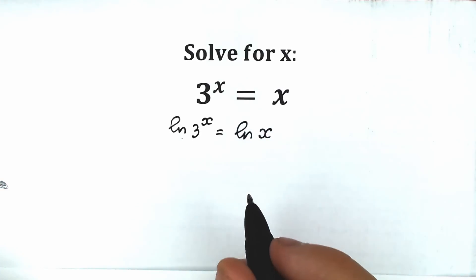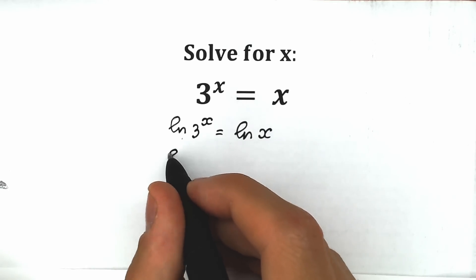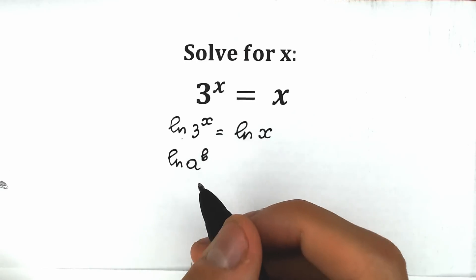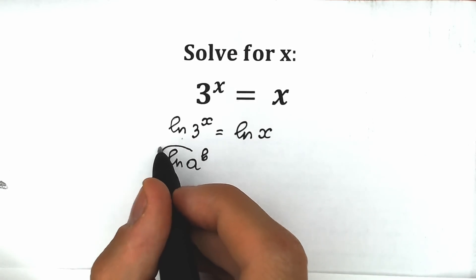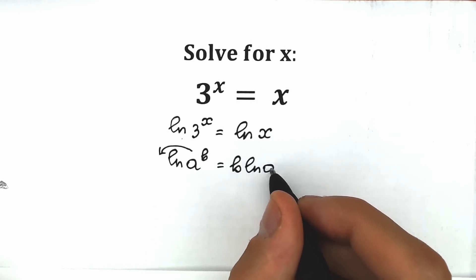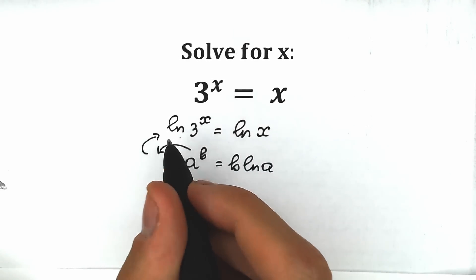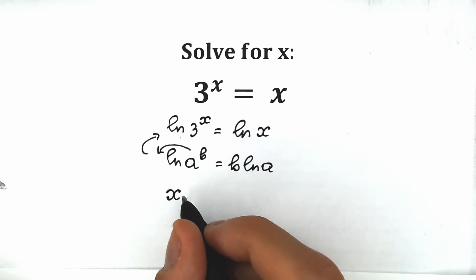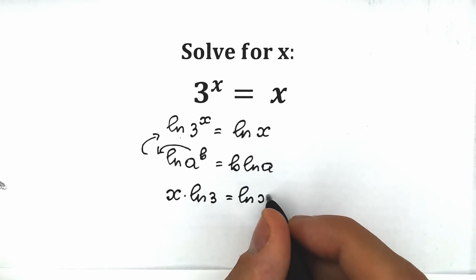Right now we need to know a really great log property. This is the classic log property: when we have natural log of a to the power b, then b comes down, so we have b times natural log a. Applying this rule on the left side, x comes down, and as a result we have x times natural log 3 equal to natural log x.